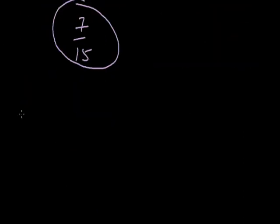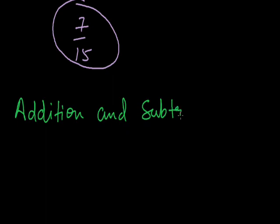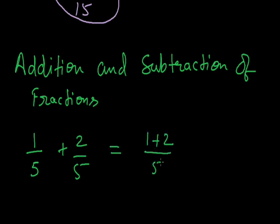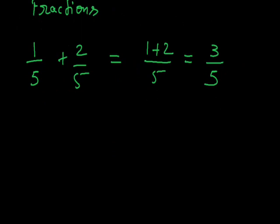Now, we will come to the addition and subtraction of fractions. First, we will take the addition of fractions. If we are having two fractions, 1 by 5 and 2 by 5, and we have to add them. Since the denominators are same, it is very simple to add them. It will be equal to 1 plus 2 upon 5. I have written the same denominator and added the numerators. So, it will be equal to 3 by 5.